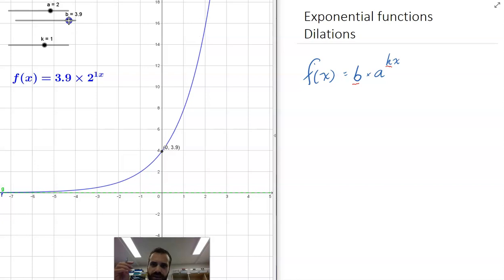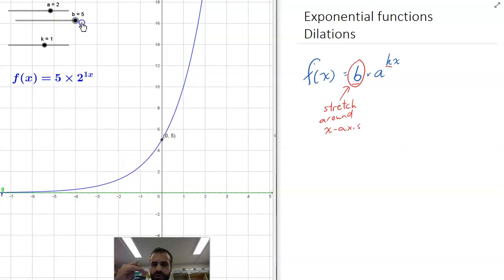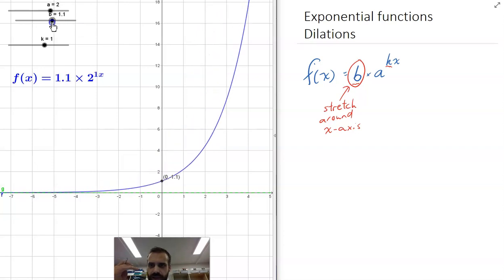What's actually happening there is it's being stretched away from the x-axis. The larger the b value, the more stretched away from the x-axis. If I go to a number less than 1, it starts to push it closer and closer to the x-axis.